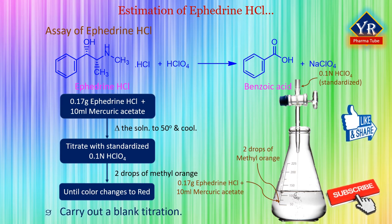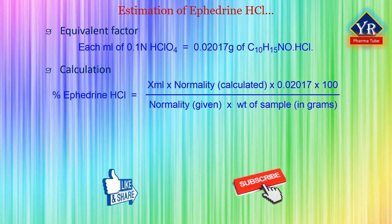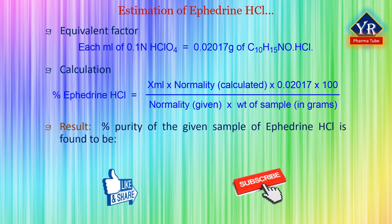Carry out a blank determination. The equivalent factor is: each ml of 0.1 normal perchloric acid is equivalent to 0.02017 grams of ephedrine hydrochloride. Percentage purity of ephedrine hydrochloride is calculated using the formula: (x ml × normality calculated × 0.02017 × 100) divided by (normality given × weight of sample in grams), where x ml is the volume of perchloric acid consumed at the end point, normality calculated is the normality after standardization, and normality given is the theoretical 0.1 normal. Results are expressed as the percentage purity of the given sample of ephedrine hydrochloride.